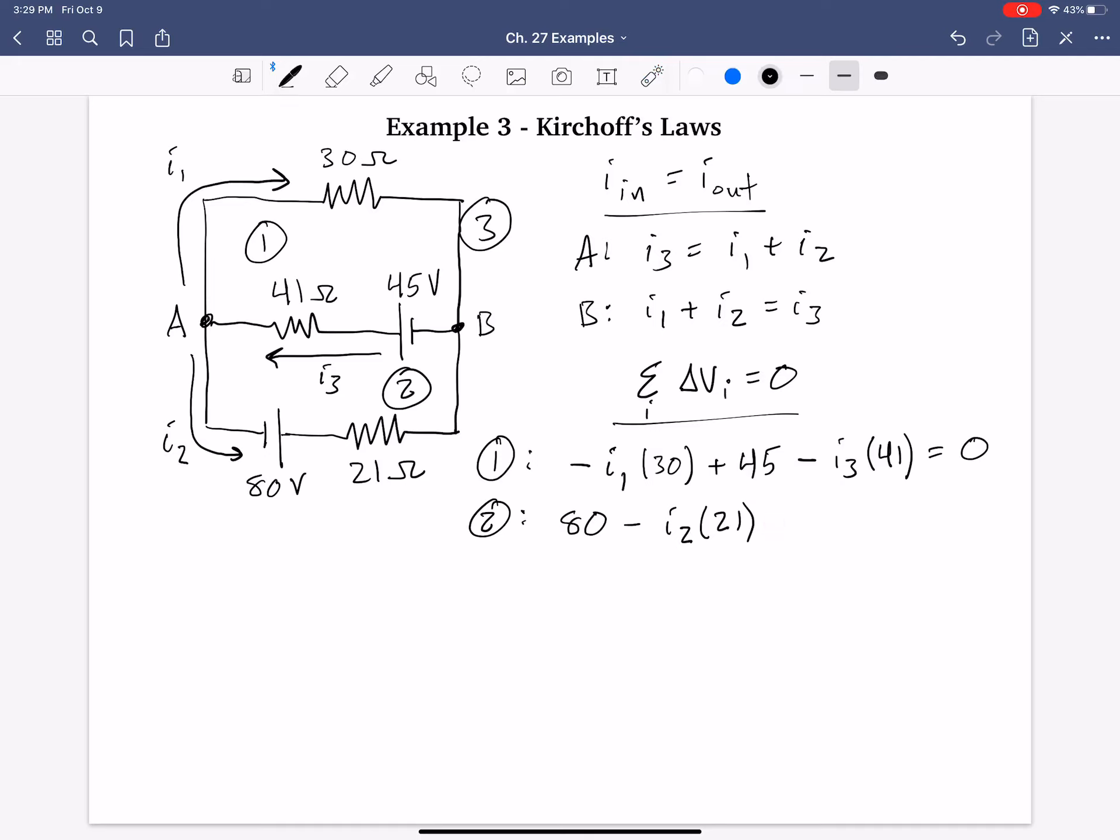So we have plus 45 minus I3 times that 41 again, and that's equal to zero. For loop three, now it's just along the outside.